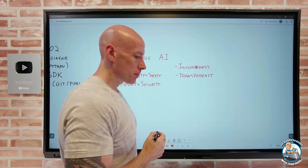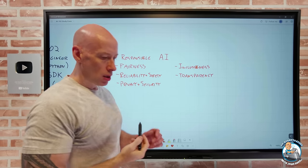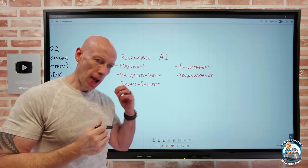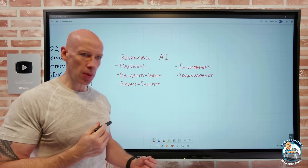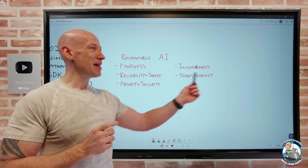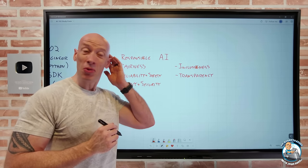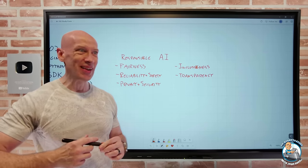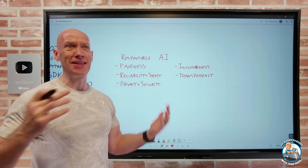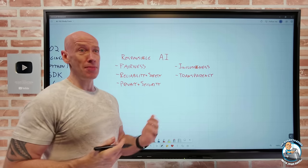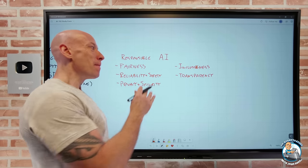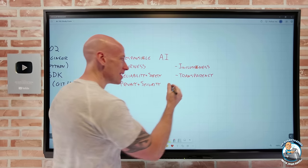Transparency: you should understand how the system is doing what it's doing, what the purpose of it is, and what the limitations are. As we get more into GPT models, we don't always fully understand how they do what they do — we have billions or trillions of parameters. Although we know how we design the model, we're not 100% sure how it does some of what it does. But transparency should be key.